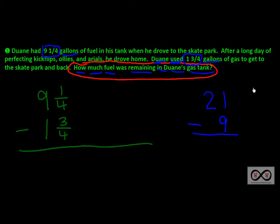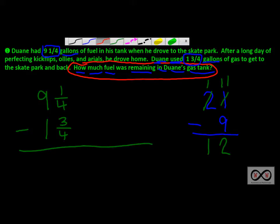Just as we learned in the past with the 21 minus 9 example — you look to the tens place and regroup. We take a group of ten from there, leaving one in the tens place, and group it with the one in the ones place, making eleven. Now you can subtract: eleven minus nine equals two. Then one minus nothing in the tens place leaves us with a grand difference of twelve. We're going to apply a similar idea when we subtract fractions.